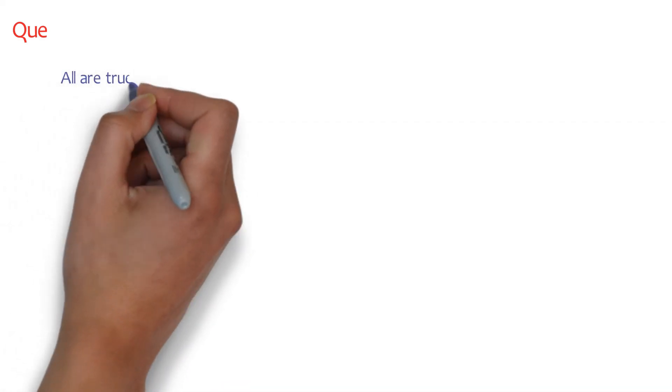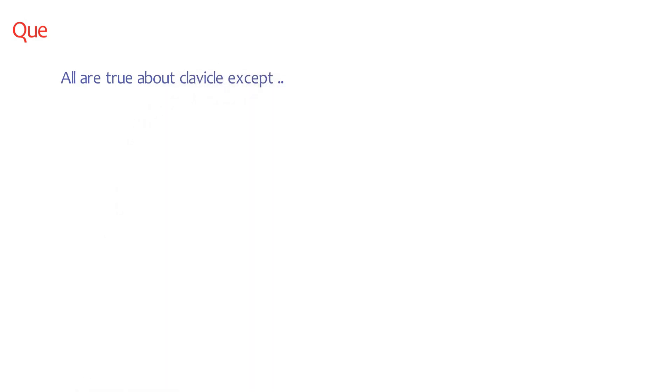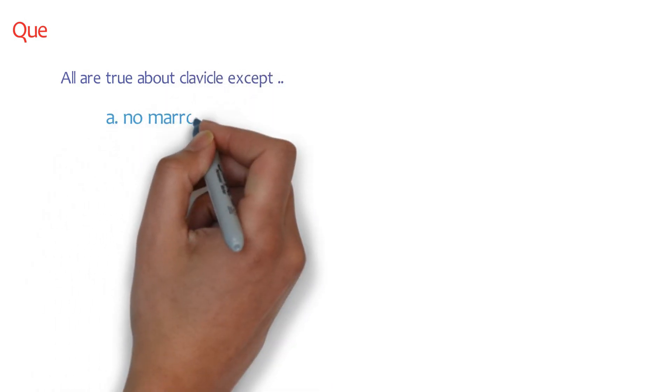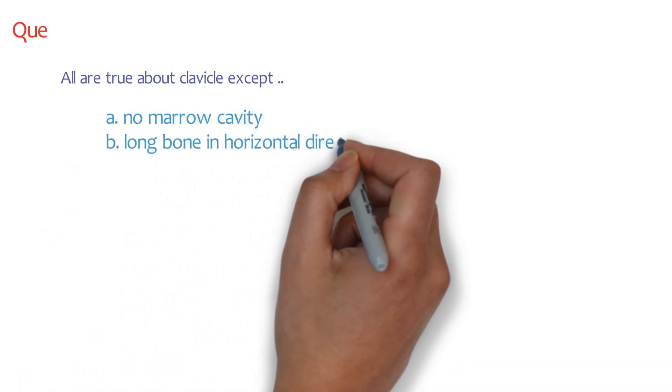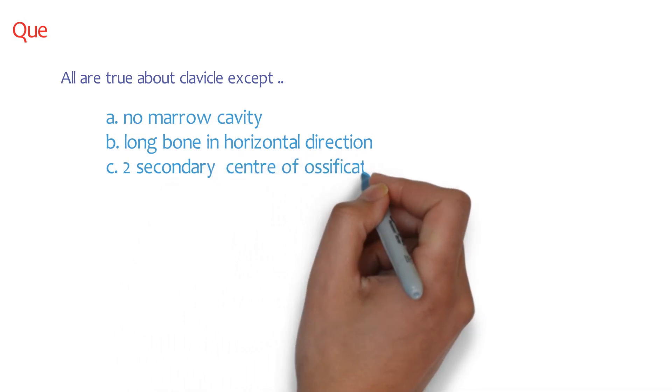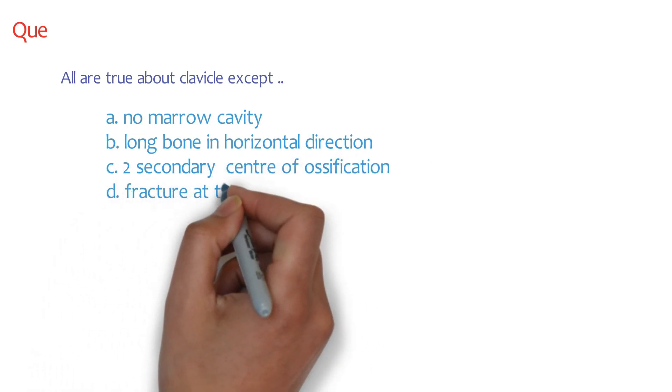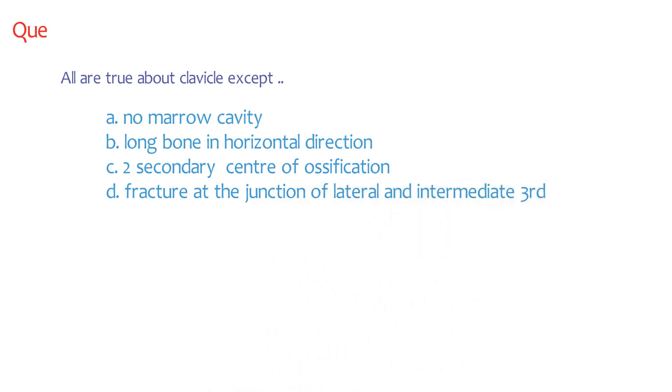Let me ask you a simple question. The question is, all are true about clavicle except: A, no marrow cavity; B, long bone in horizontal direction; C, two secondary centers of ossification; and D, fracture at the junction of lateral and intermediate third. So what is your answer?